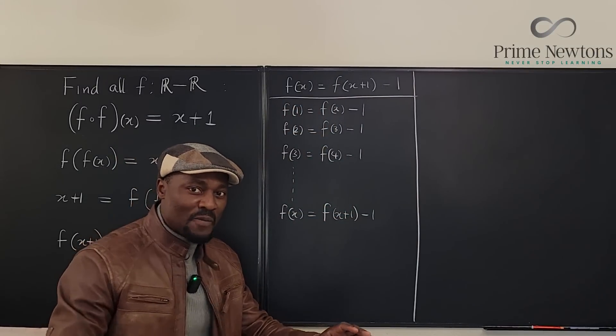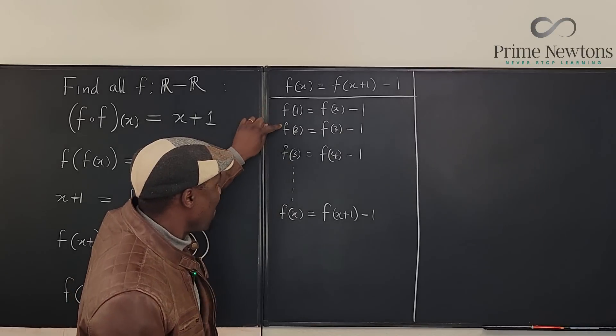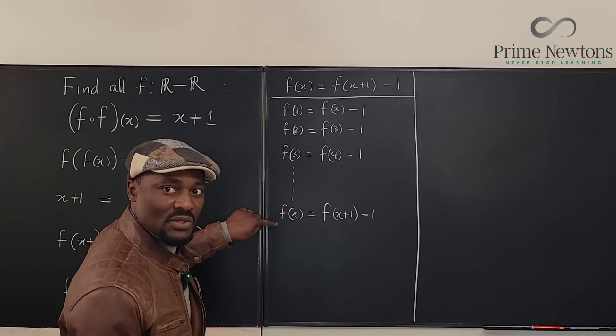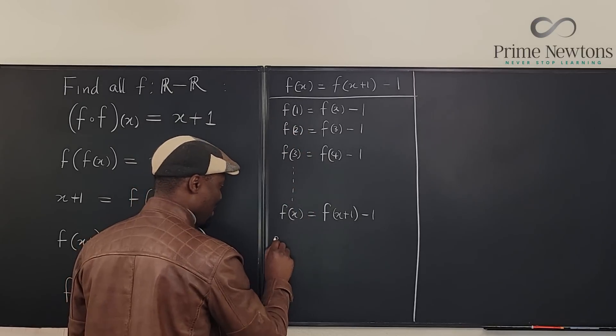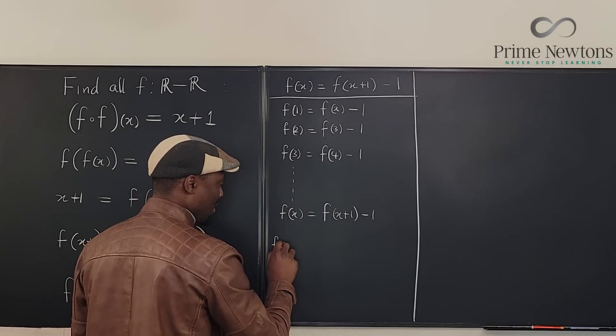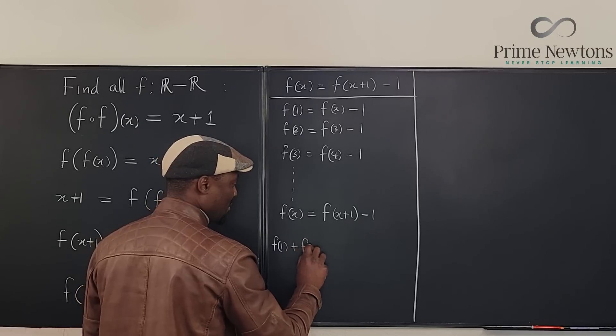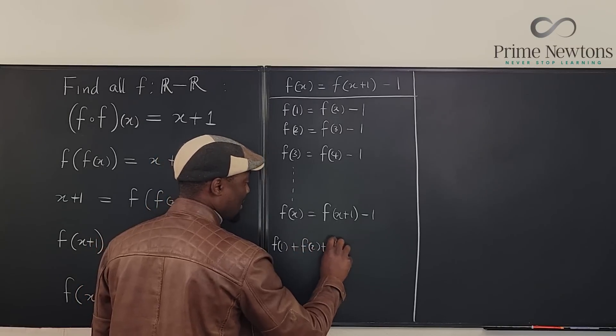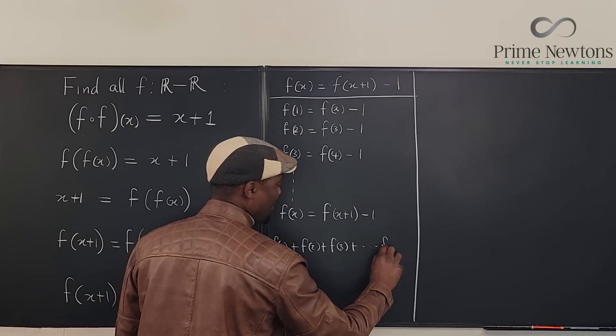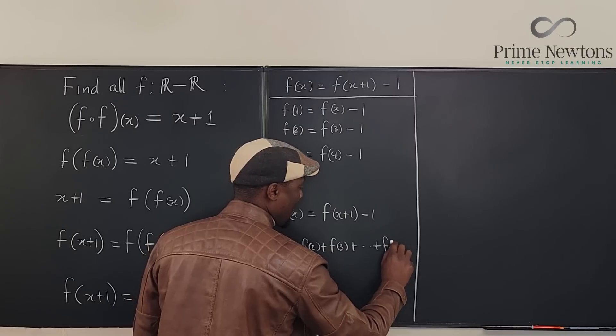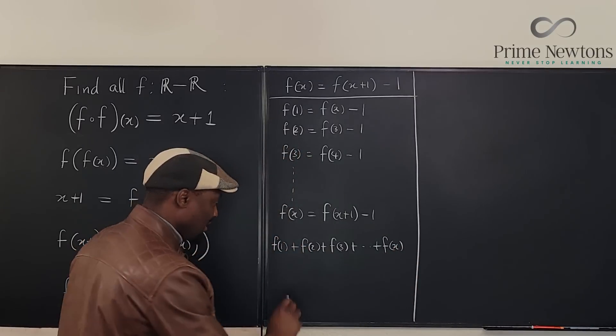Now see what I can do. I can decide to add up everything here and see what happens. If I add up everything here it's going to be f of one plus f of two plus f of three plus f of x plus f of x plus one.